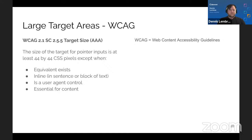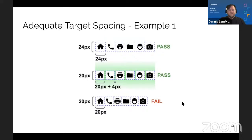Examples from the WCAG 2.2 document: a row of 24×24 px icons — pass. Icons at 20×20 px but with 4 px spacing between each, totaling 24 — pass. Icons at 20×20 px with no additional spacing, directly adjacent — fail. Controls much wider than 24 px but only 20 px in height in a single row with no targets above or below — pass because there's implied 2 px whitespace making it 24 total.